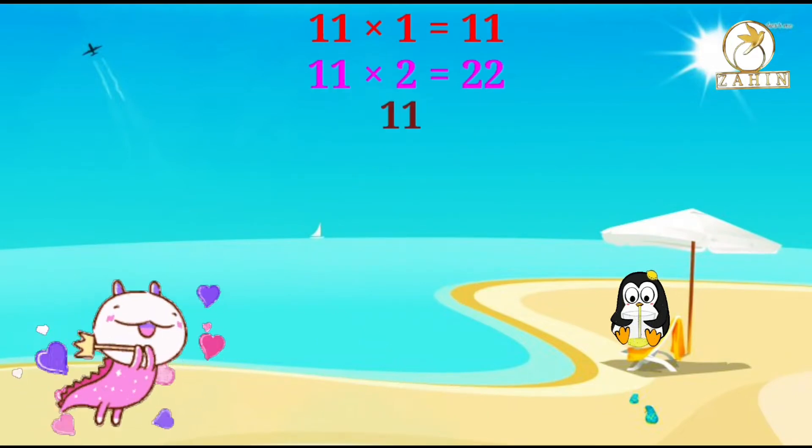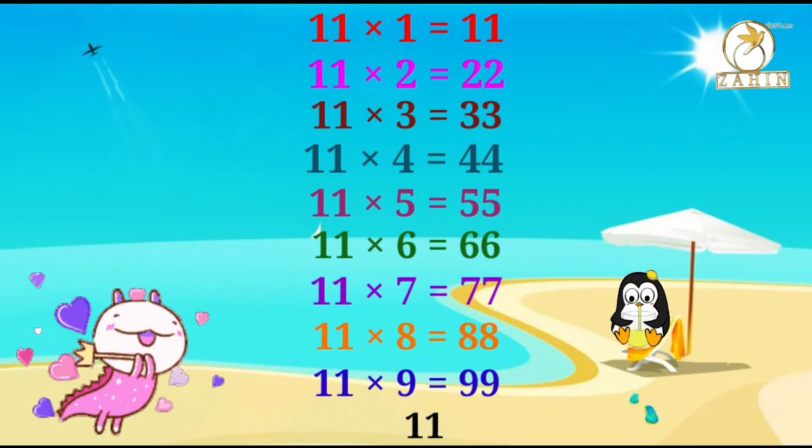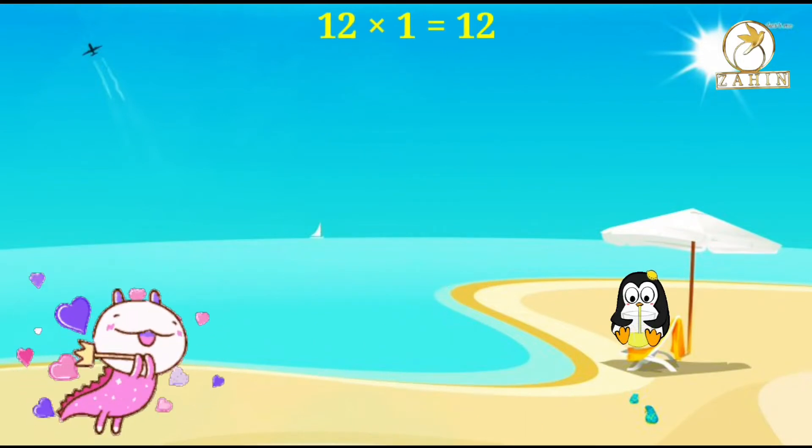11 times 2 equals 22, 11 times 3 equals 33, 11 times 4 equals 44, 11 times 5 equals 55, 11 times 6 equals 66, 11 times 7 equals 77, 11 times 8 equals 88, 11 times 9 equals 99, 11 times 10 equals 110. 12 times 1 equals 12.